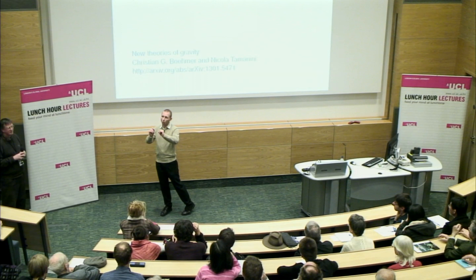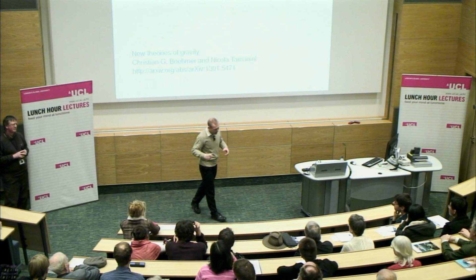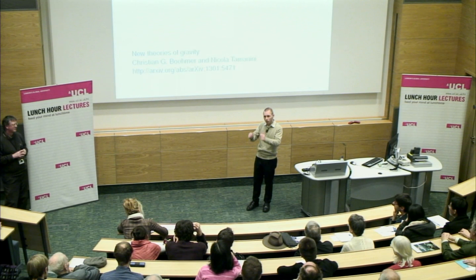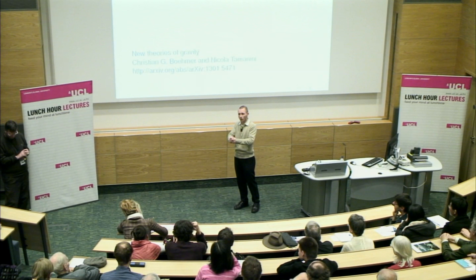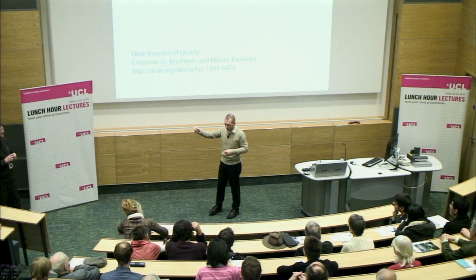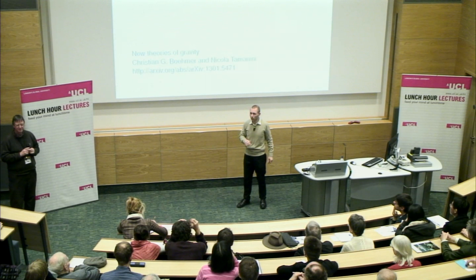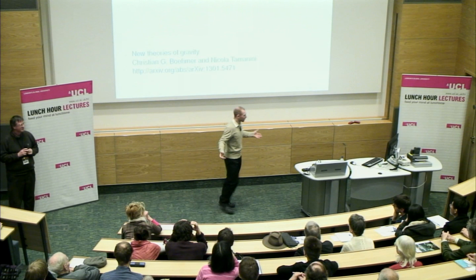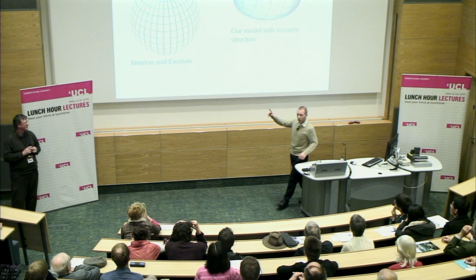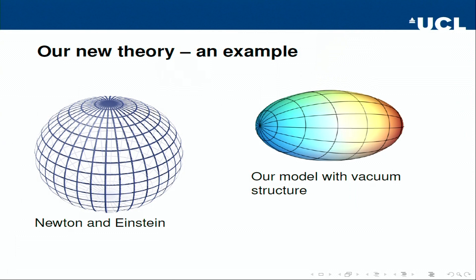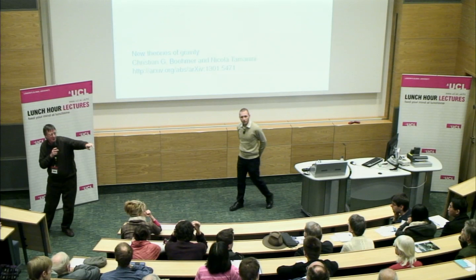We need to measure what the structure is before putting it into the equations — we cannot prescribe it from first principles. It's like a spring constant: you can go measure how strong the spring is, but you can't theoretically derive it from first principles. Our structure must be determined experimentally. We can propose examples: one is that in Newton's theory you get a sphere, but in our model you can get a solution where at large distances the gravitational field is more ellipsoidally shaped than spherically shaped.